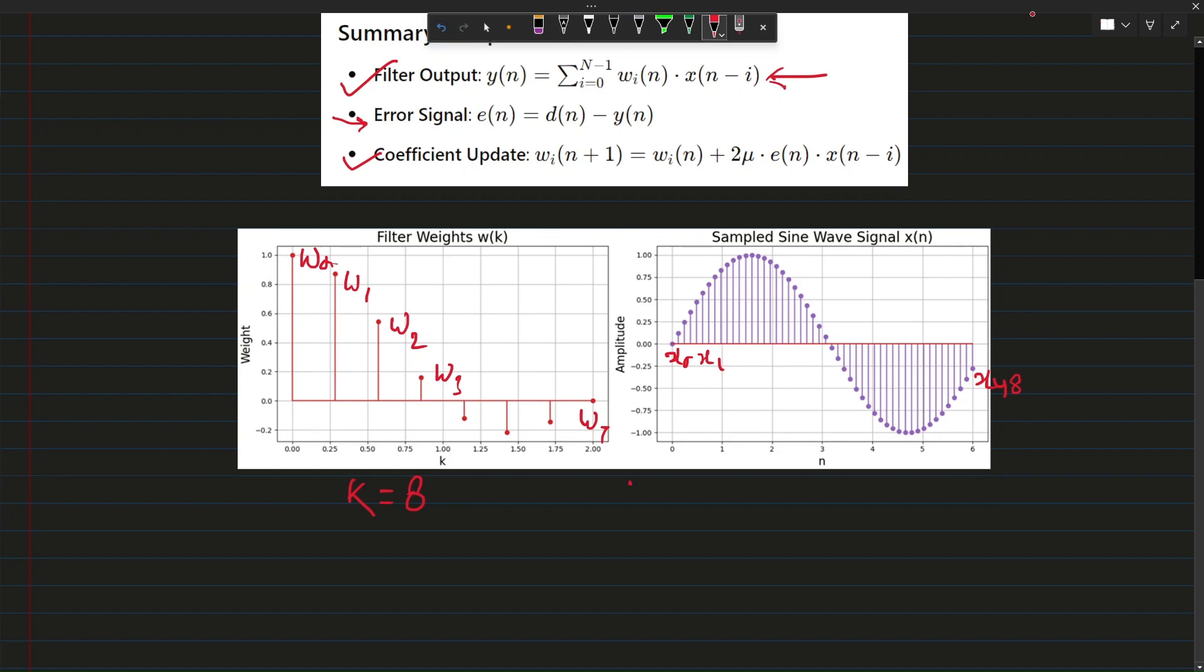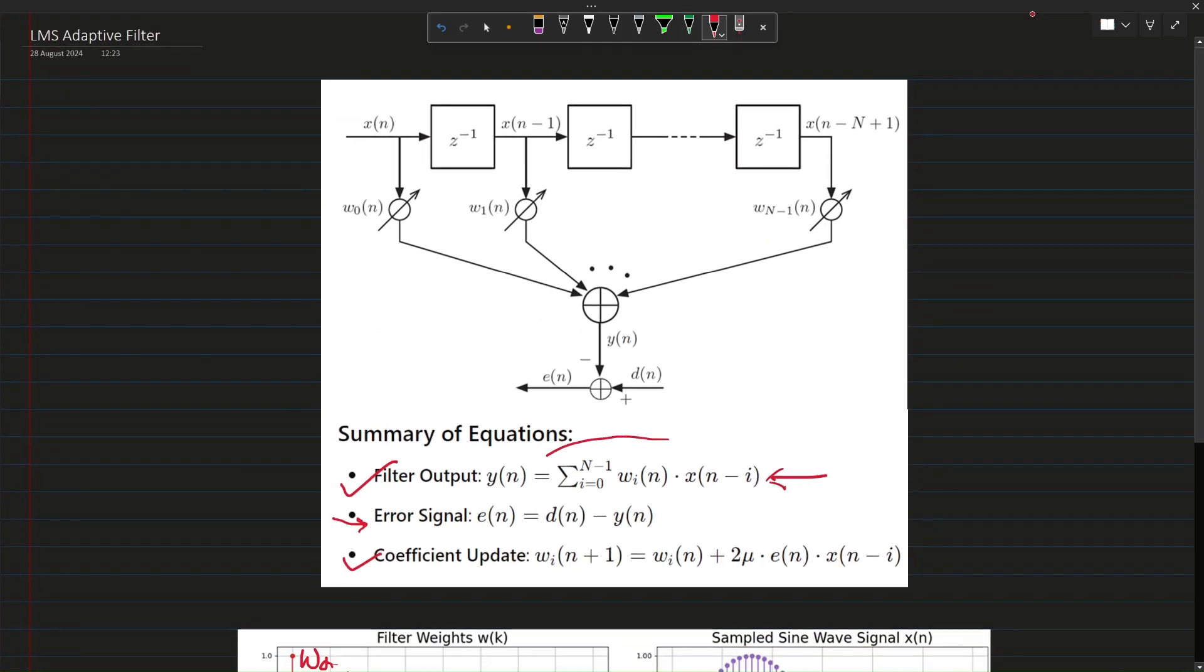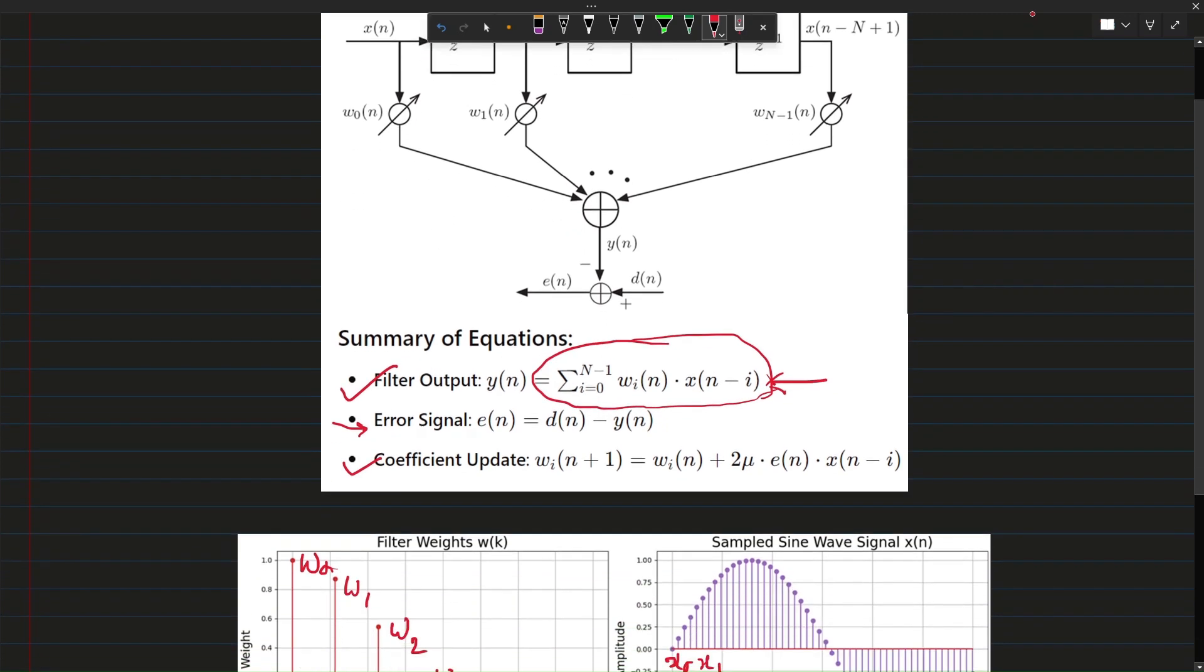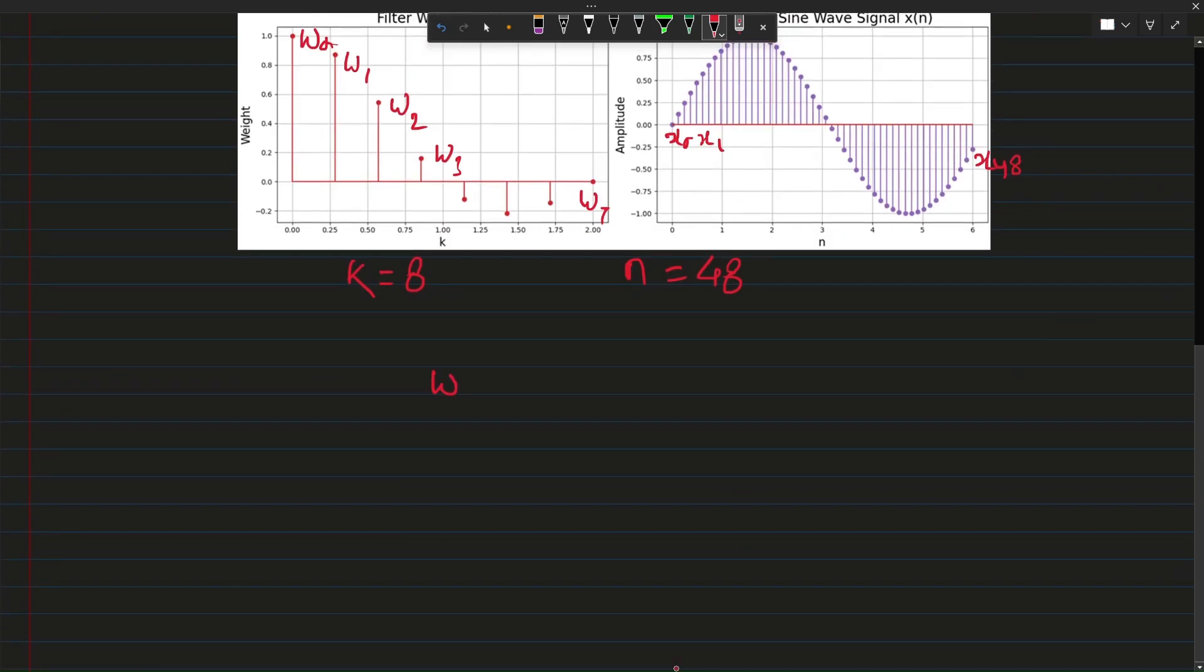which is 8 tap and we have a signal sample which is 48. What this equation is doing is pretty simple. It is taking weight 0 and multiplying it by flipped version of the signal, 48. When we flip the signal x and look from this direction, 48 will come first. Then it takes weight 1 and x47, then weight 2 and x46, then weight 3 and x46 and so on until we reach weight 7 and x40.